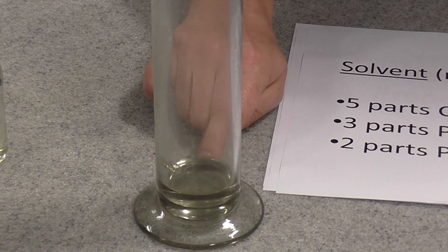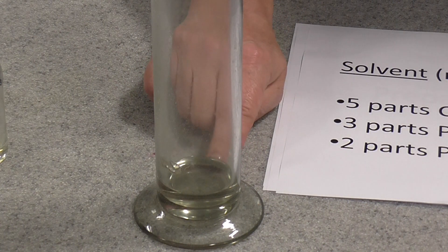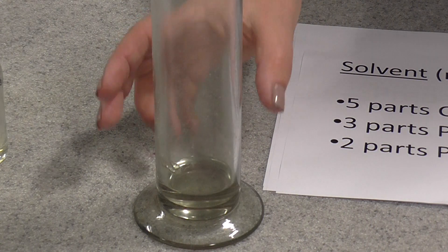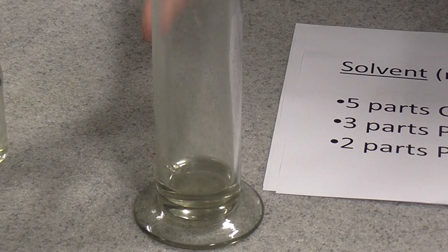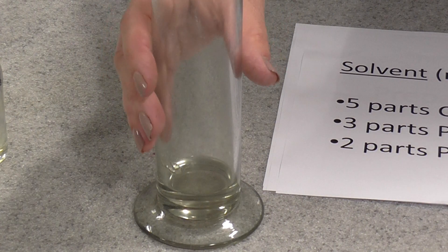You need to put a little bit of that, about a centimeter deep at the maximum, into the bottom of your gas jar and put the lid on so that it's quite volatile and you'll get the vapors collecting in here.